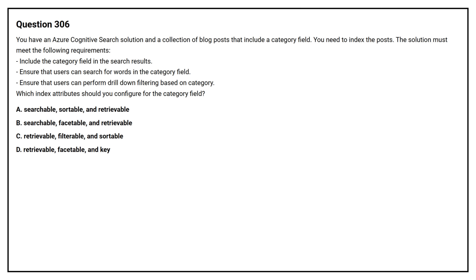Question number 306. You have an Azure Cognitive Search solution and a collection of blog posts that include a category field. You need to index the posts. The solution must meet the following requirements: include the category field in the search results, ensure that users can search for words in the category field, and ensure that users can perform drill-down filtering based on category. Which index attributes should you configure for the category field?